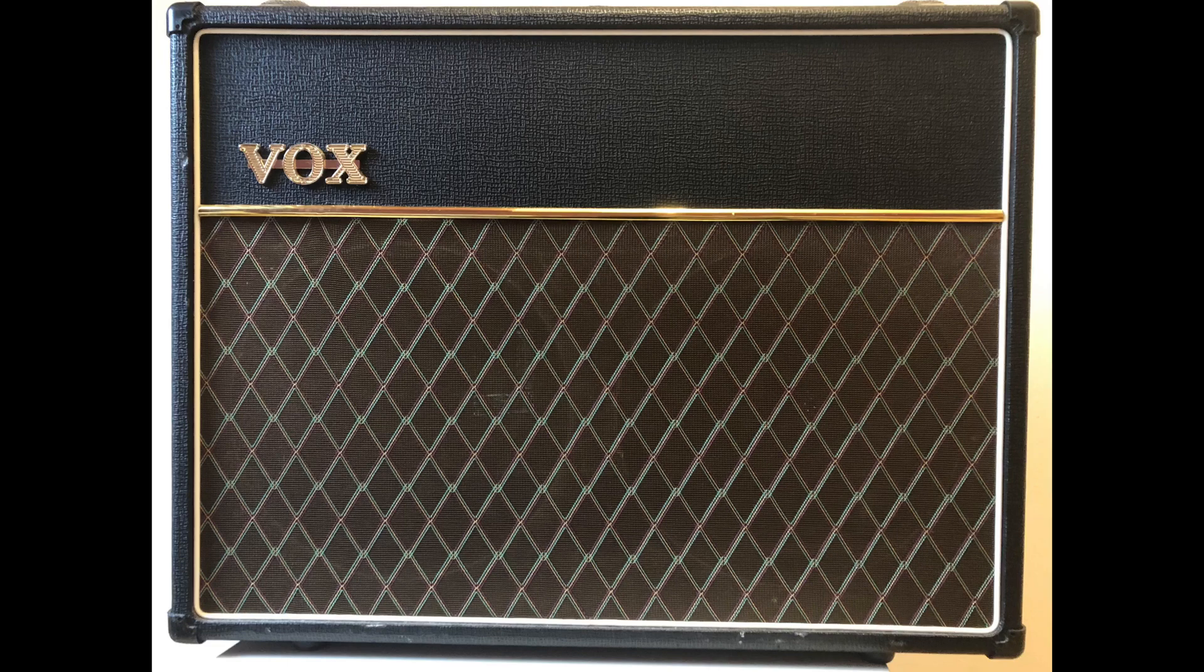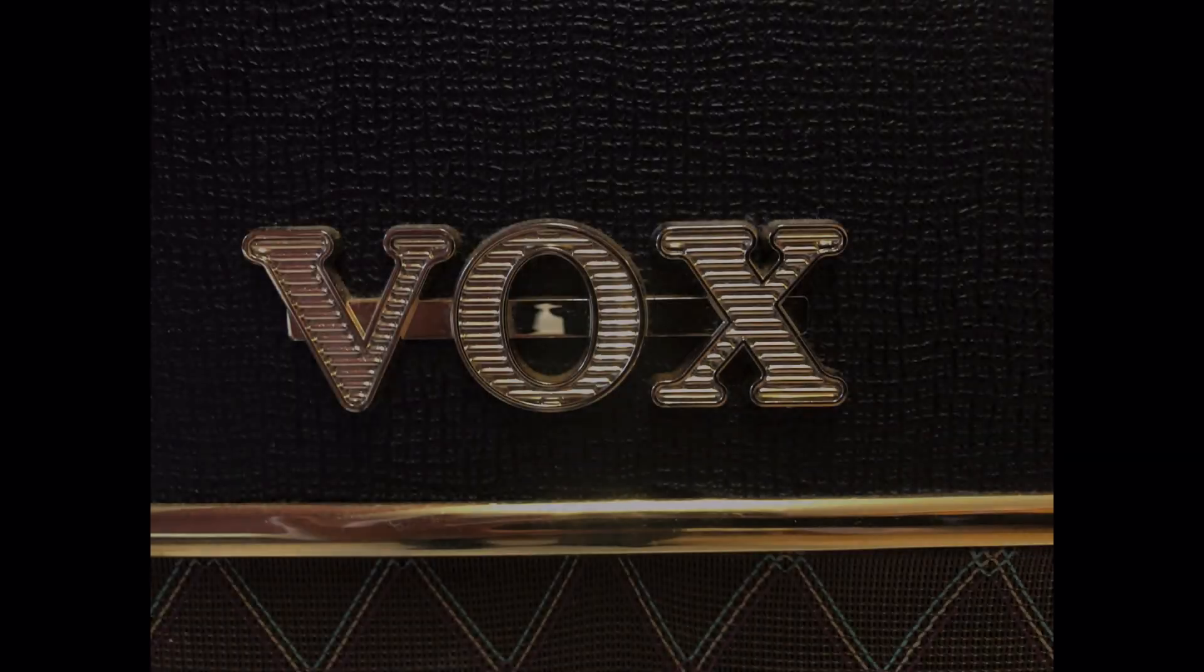Welcome all you guitar nerds out there. Today on the bench we have this VOX AC30 Amp Model C2. The owner complains about crackling noise, hiss and hum, so we will take care of that. And later in this video I will show you how to cool down the bias on these amps.